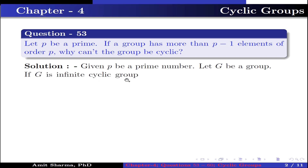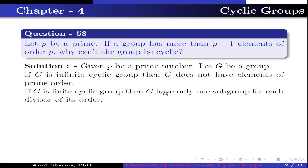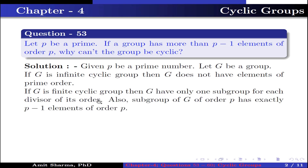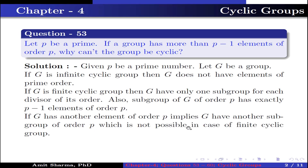If G is an infinite cyclic group, then G does not have an element of prime order. If G is a finite cyclic group, then G has only one subgroup for each divisor of its order. Also, the subgroup of G of order P has exactly P-1 elements of order P. If G has another element of order P, this implies G has another subgroup of order P, which is not possible in the case of a finite cyclic group.